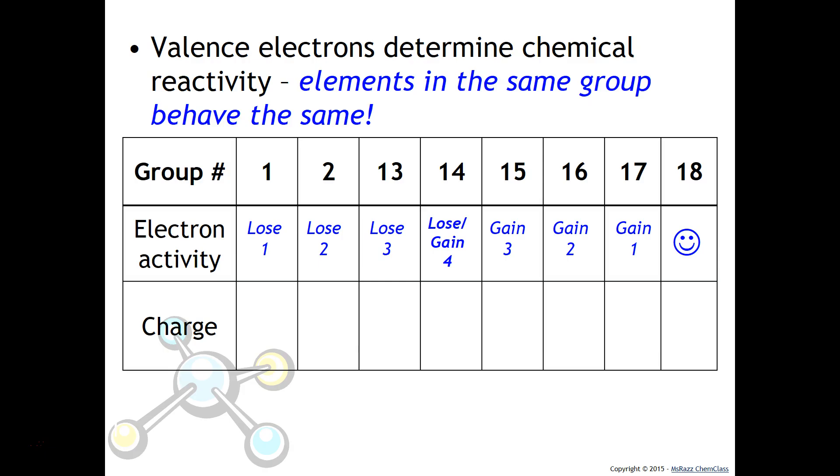When group 1 loses one electron, it'll be a plus one charge. When group 2 loses two, it'll be a plus two charge. Group 13 will be plus three. Since group 14 can lose or gain, it'll be plus or minus four. Group 15 will be minus three. 16 will be minus two. And 17 will be minus one. And again, group 18 is satisfied, so we won't see any loss or gain of electrons.